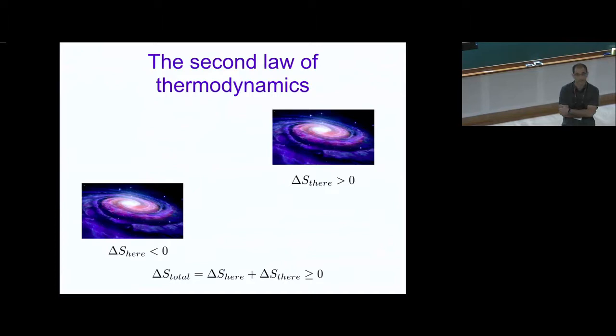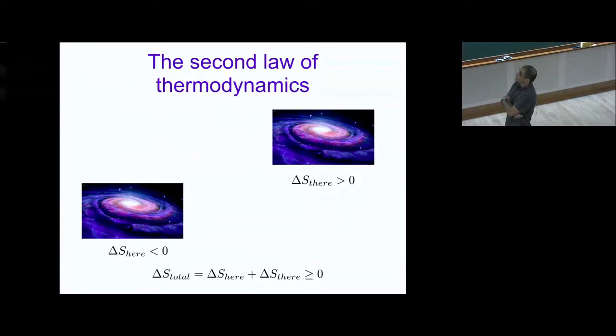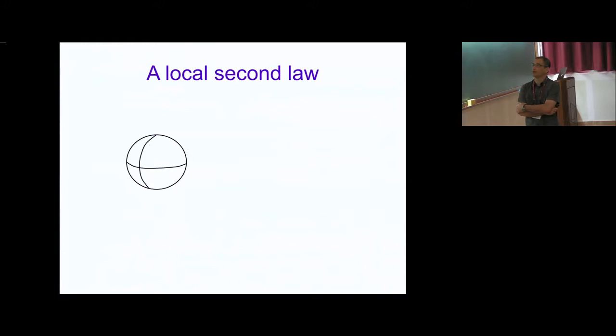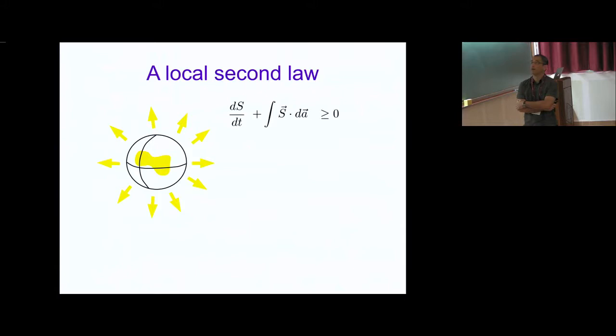Of course we all know that such a process can't happen. The way to make a more precise formulation about what is allowed and what is not has to do with a local version of the second law, which one can find in Landau and Lifshitz. The local version says that if we have some region of space and we want to talk about the change of entropy in that space, the change of entropy plus the total flux leaving that region should be non-negative.